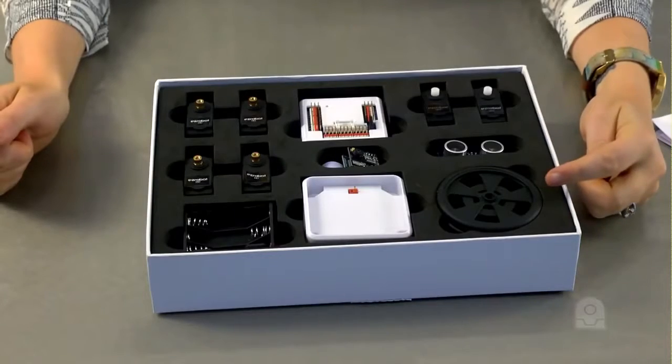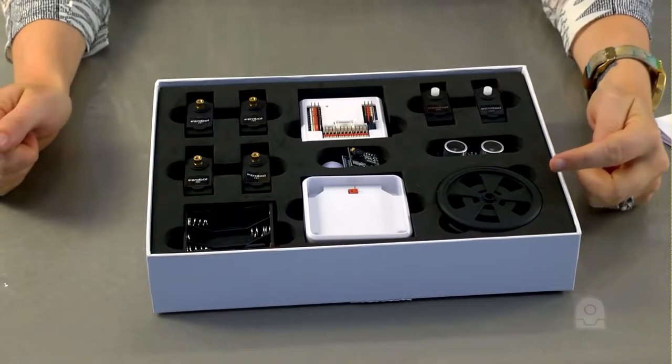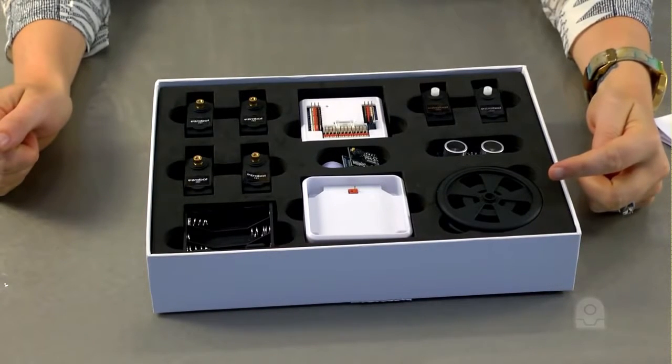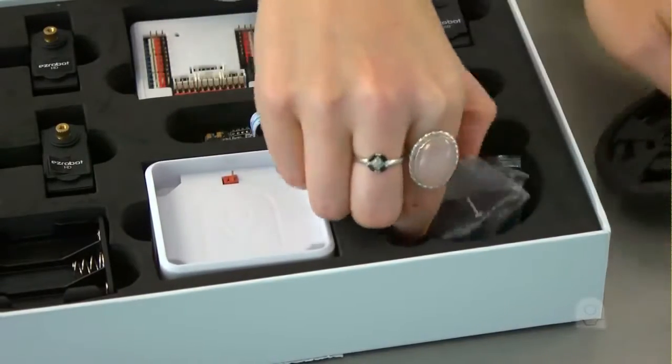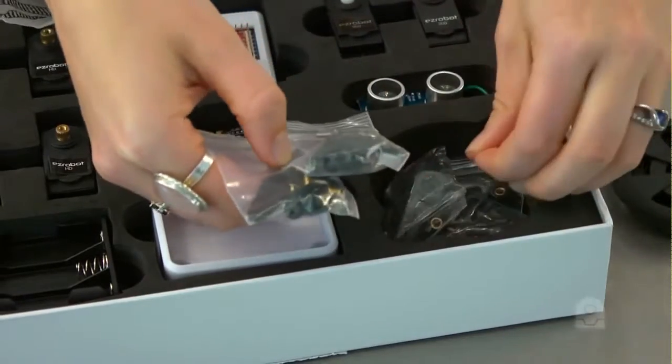Here are two servo wheels for the 360-degree modified servos. These wheels can be used to move your robot. Under the wheels are an assortment of accessories, screws, and servo adapters.